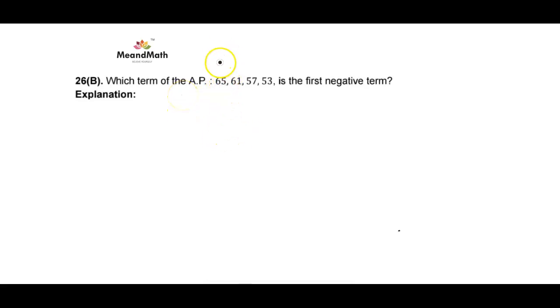The first term is 65, so the value of A is 65. Can we find the common difference? It's a decreasing AP, so the common difference will be negative, right? It's negative 4, you can easily find it out.